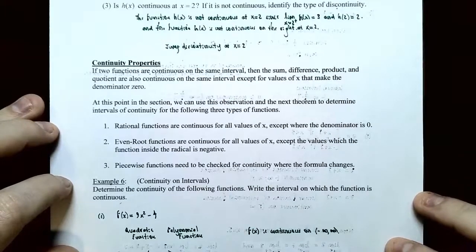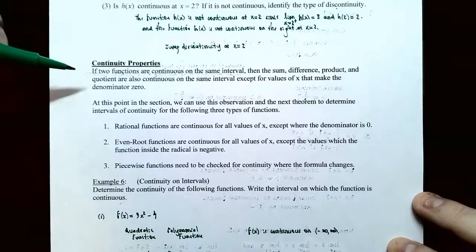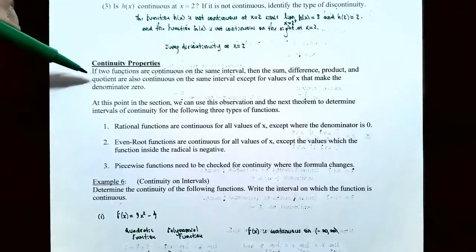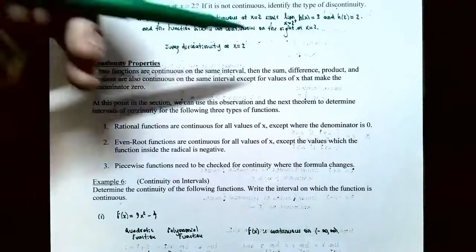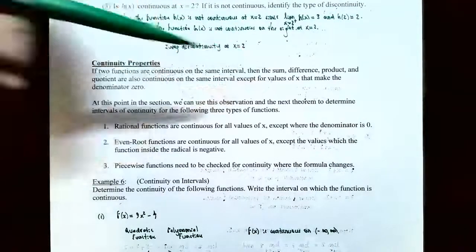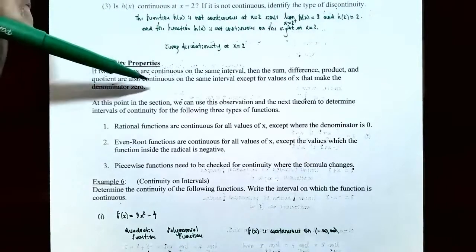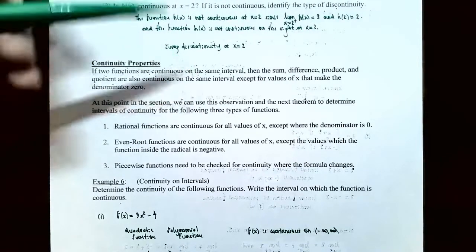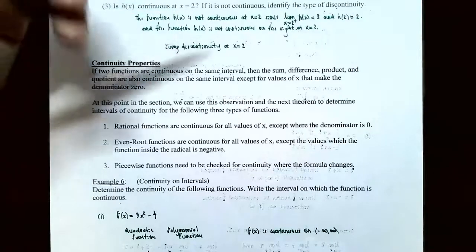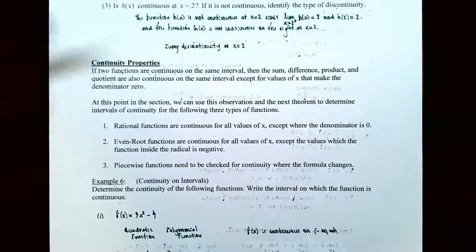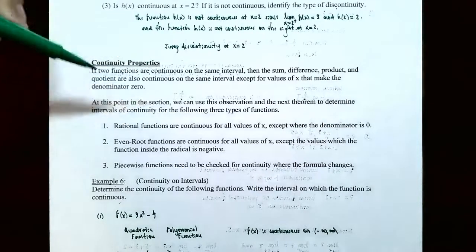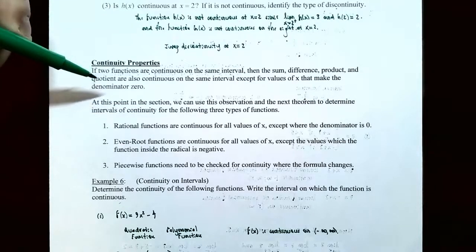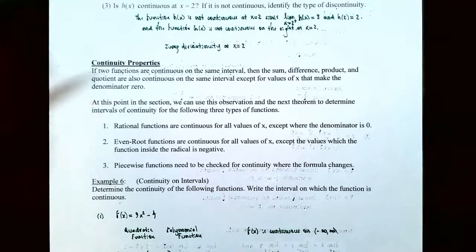Now let's talk about continuity properties for functions. If two functions are continuous on the same interval, then their sum, difference, product, and quotient will also be continuous on the same interval — except for the quotient, which excludes x values that make the denominator 0. We can use this to identify where a function is continuous on an interval.